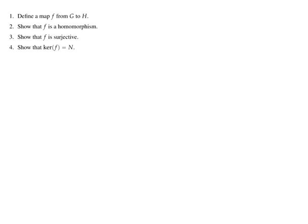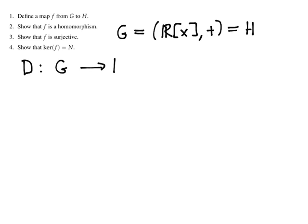Let's do one last example, and here we're going to mix it up a little bit. The group G is going to be the polynomials with real coefficients, considered as a group under addition. I'm actually going to let that equal H as well — same domain and codomain. Instead of telling you what the normal subgroup N is, I'll give you a homomorphism from G to H directly. We'll call that homomorphism D, going from G to H, sending a polynomial P to DP, which is just P-prime — the ordinary derivative of P.